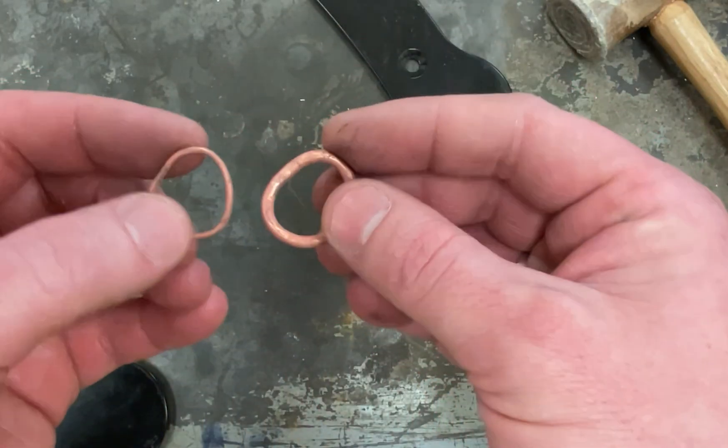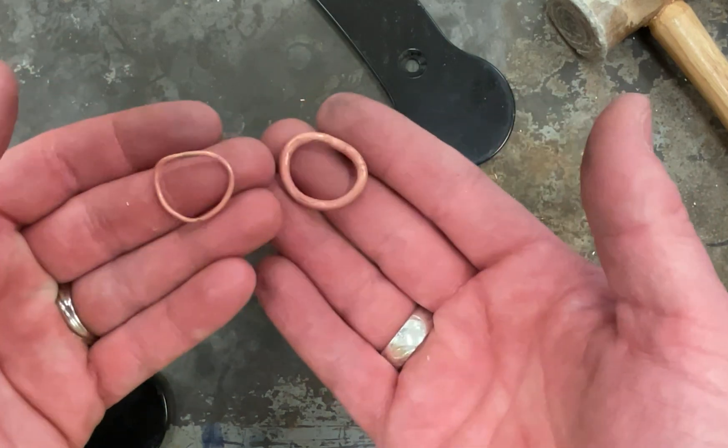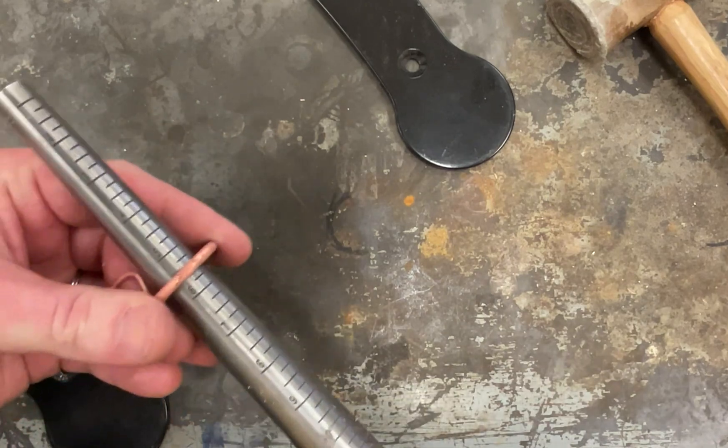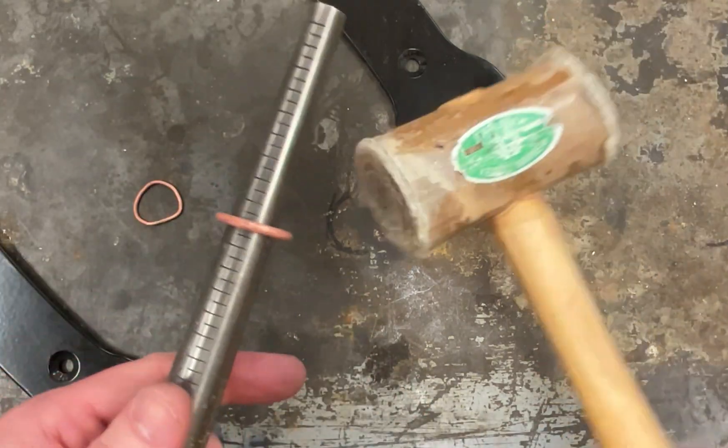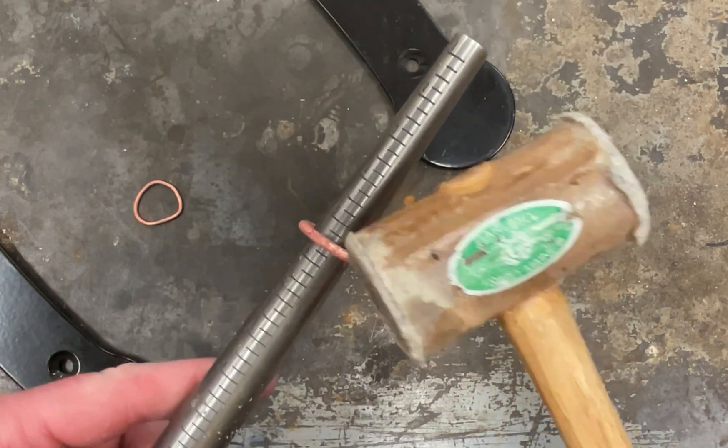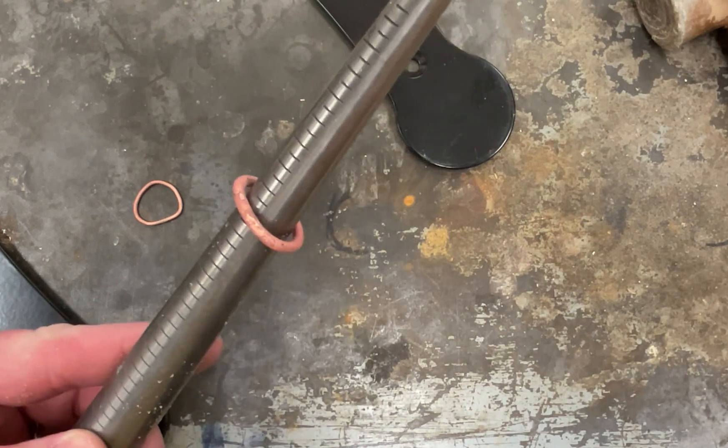I've got these soldered. And now, they're very much not round, which is unfortunate. And what we're going to do is we're going to put them on the mandrel and hit them with a rawhide mallet. Use a rawhide mallet so that you don't put a bunch of dents in the middle. I'll hammer this off camera because it's really loud.